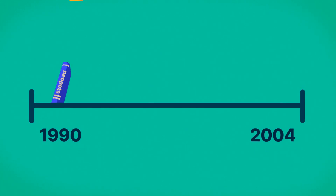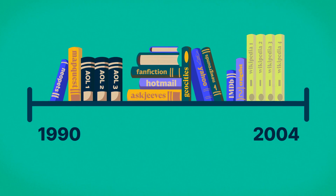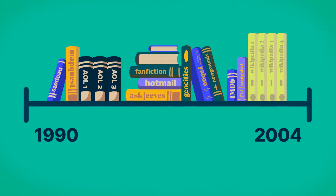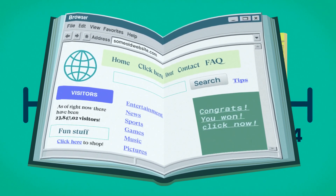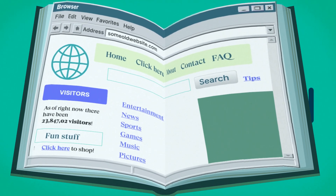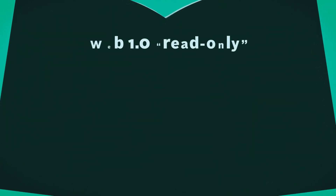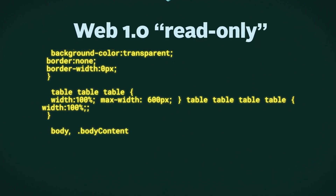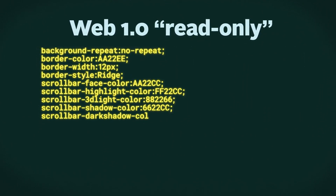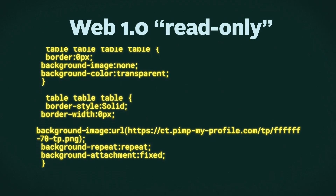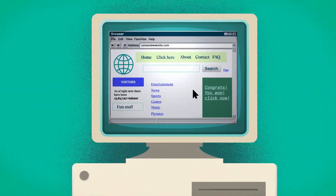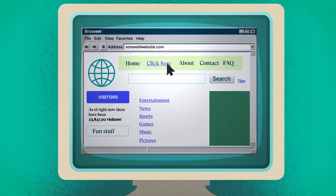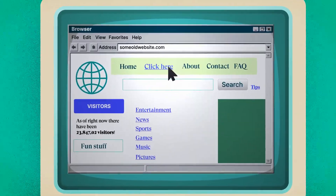Going back to the early days of the World Wide Web between 1990 and 2004, you could think of the Internet as more of a library for people to look up websites and read the information on them in text or image format. This was the Web 1.0, or read-only era, where only a few people could create hard-coded HTML static pages for users to view content, and to move from one page to the next, users would click on hyperlinks — but that was about it.